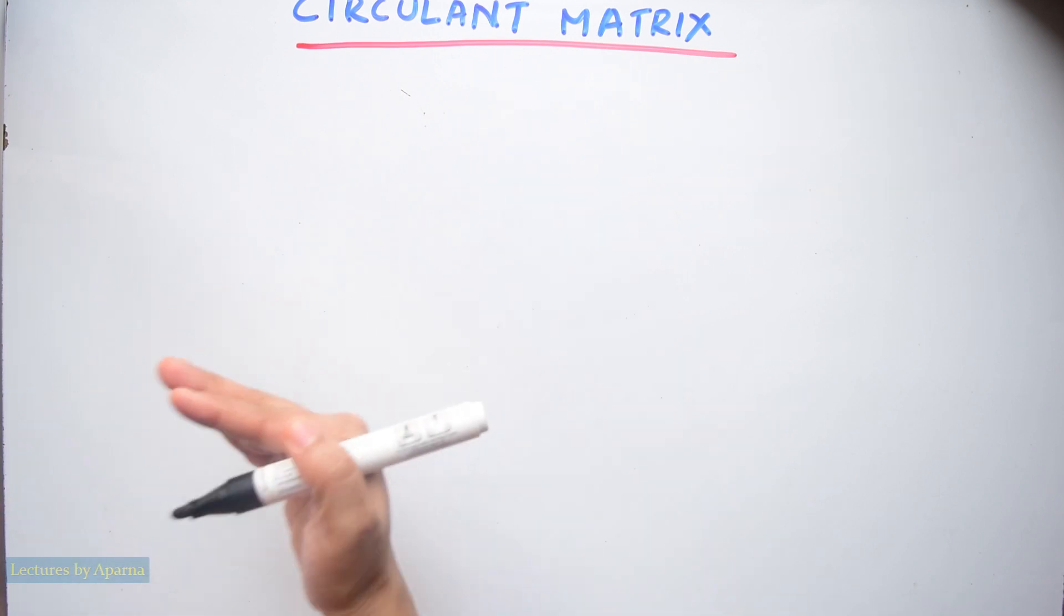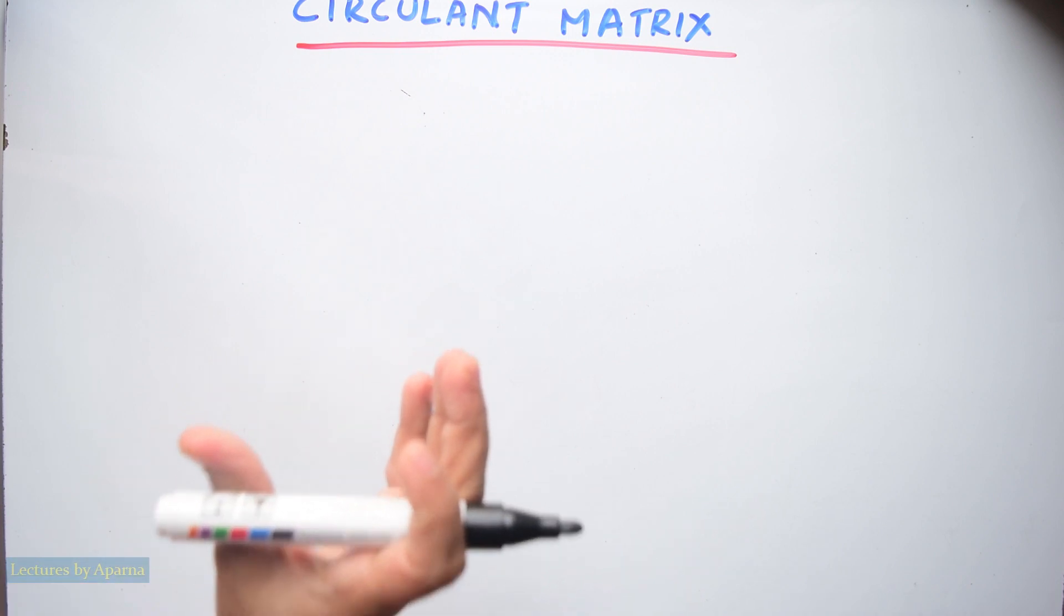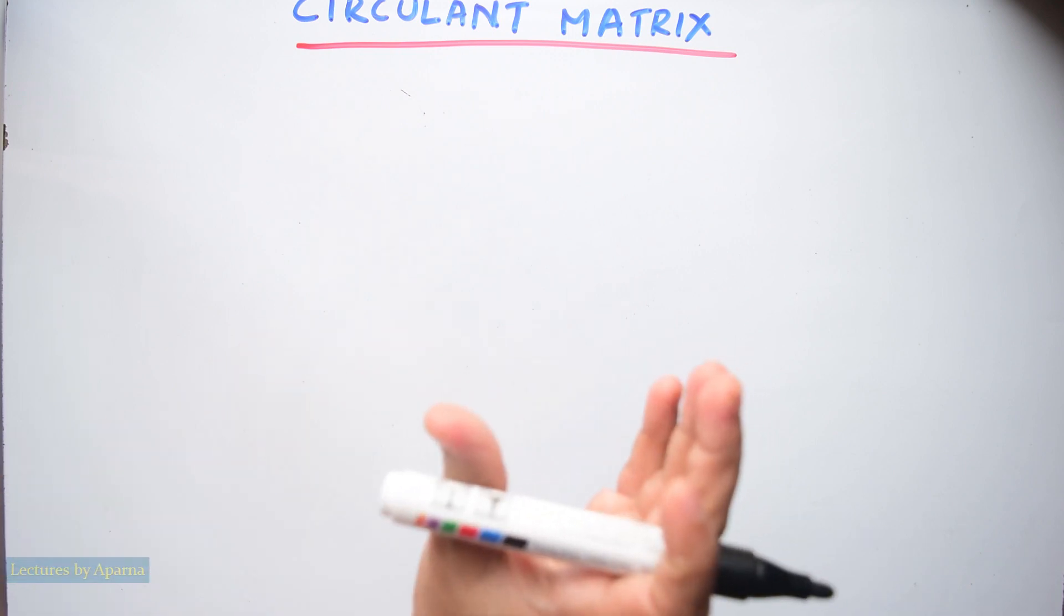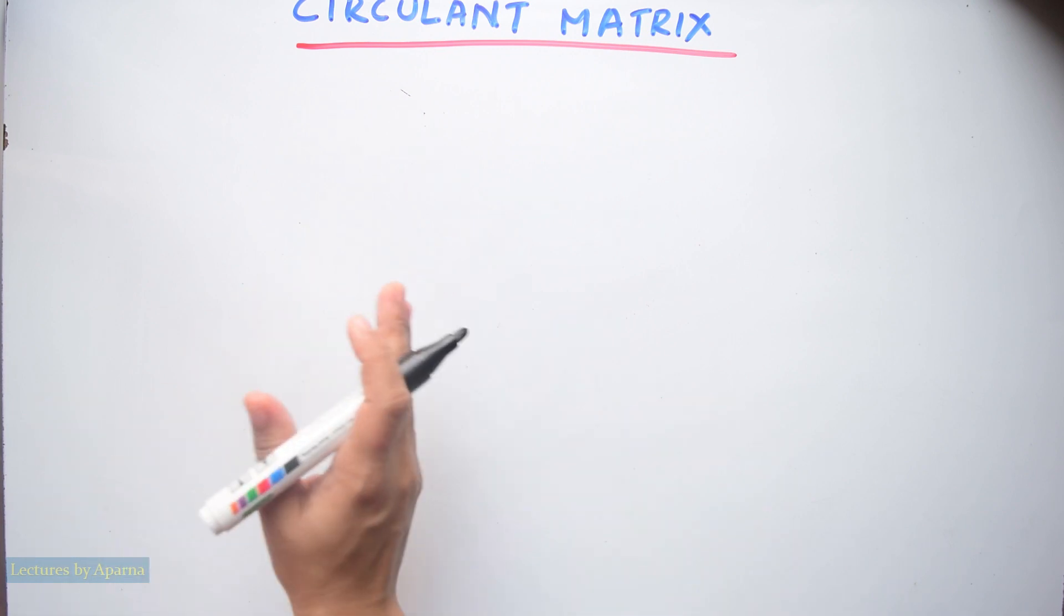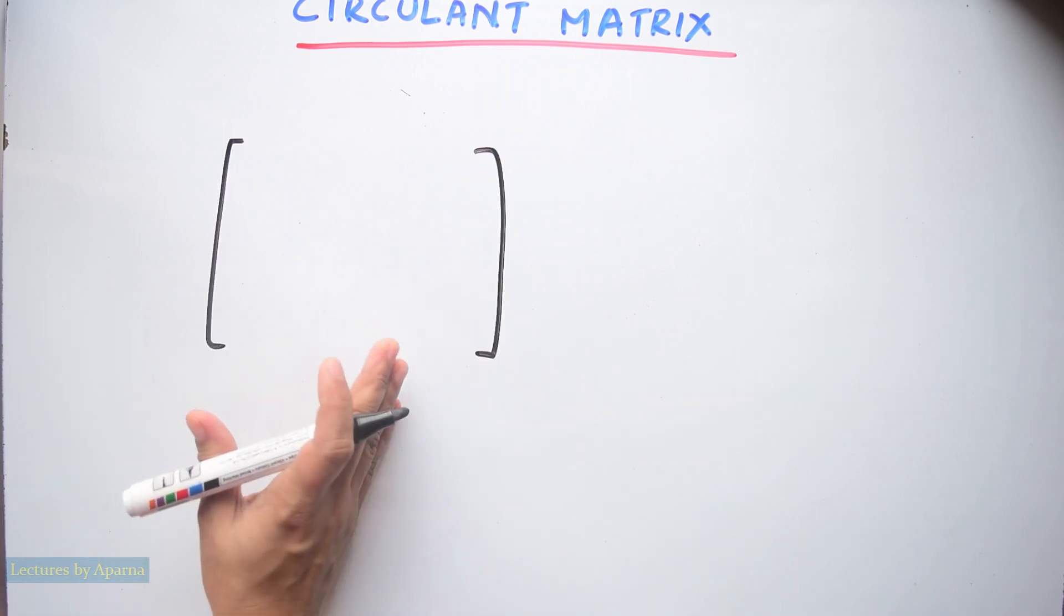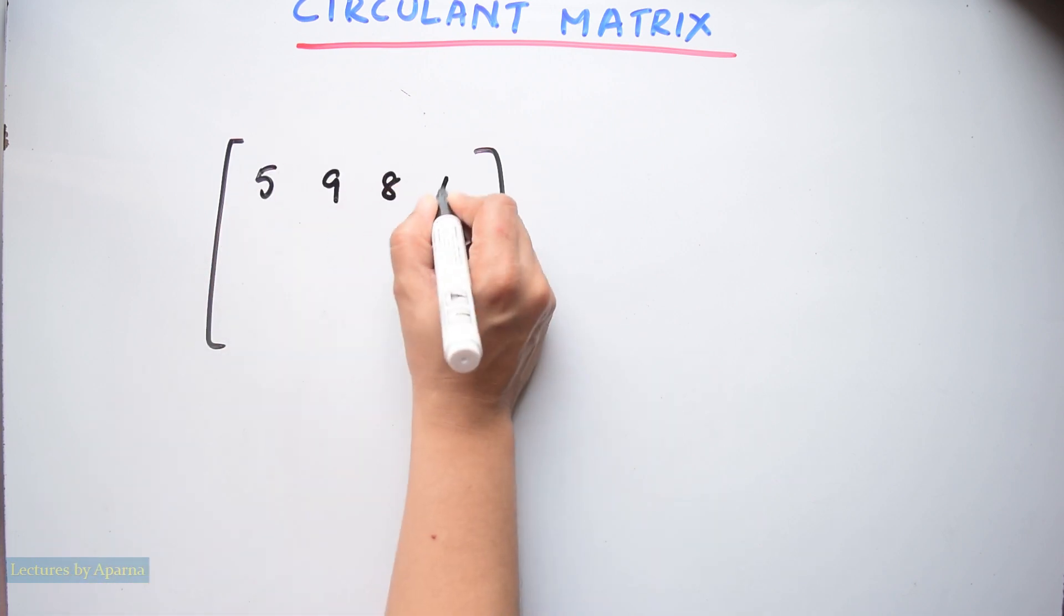Circulant matrix is a square matrix in which each row vector is rotated one element to the right relative to the preceding row vector. I will show how to write a circulant matrix. Suppose if I am writing the first row of a matrix as 5 9 8 4.